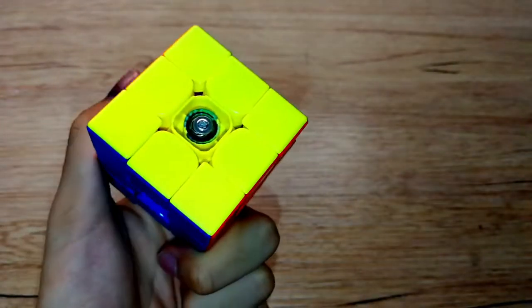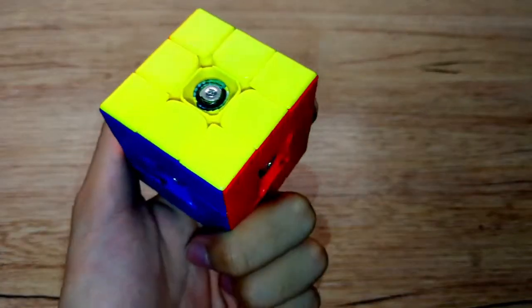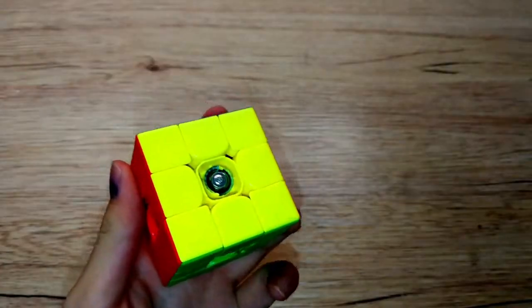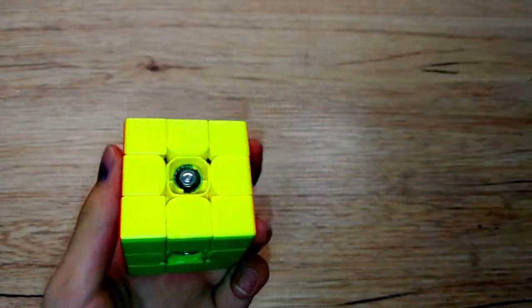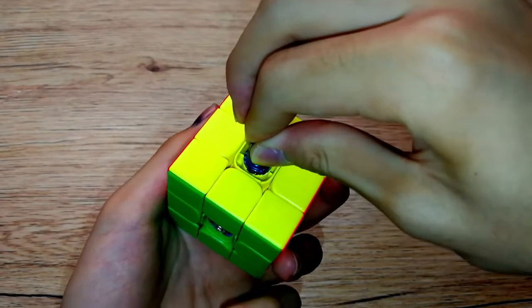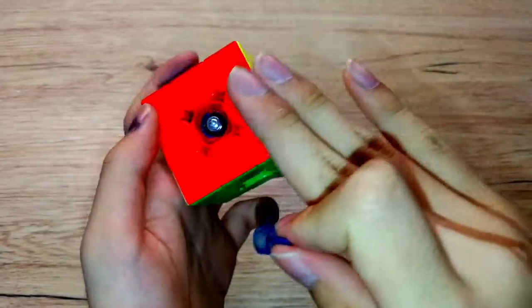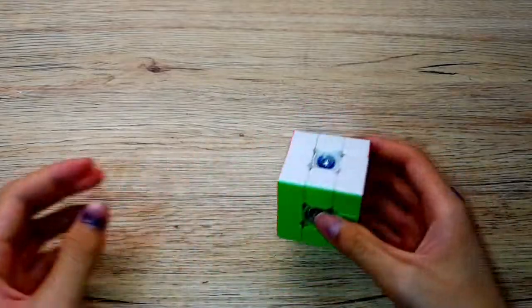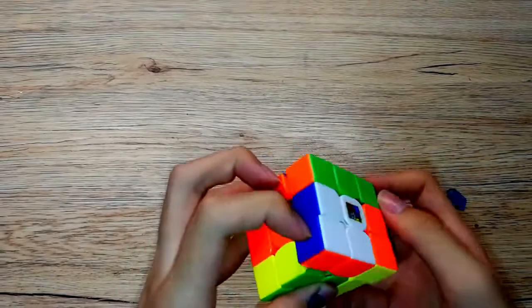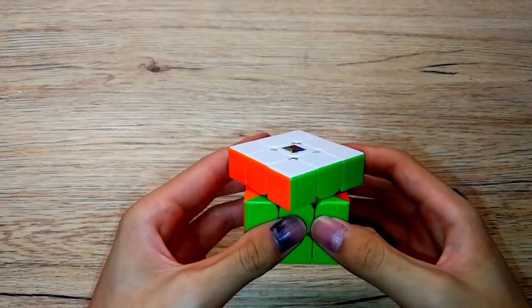That is way louder than any other click, so that means you've reached the lowest setting again. I am going to go for setting number five, so I have to hear five clicks: one, two, three, four, five. There we go. Now I'm going to do the same thing to five other sides.